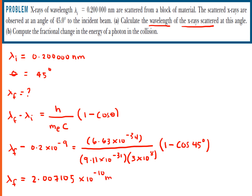Solving this equation gives the scattered wavelength as 2.007105×10⁻¹⁰ meters. You have to include as many significant figures as possible because the change in wavelength is very small. We can express this as 0.2007105 nanometers — notice how close the final wavelength and the initial wavelength are. We have solved Question A.